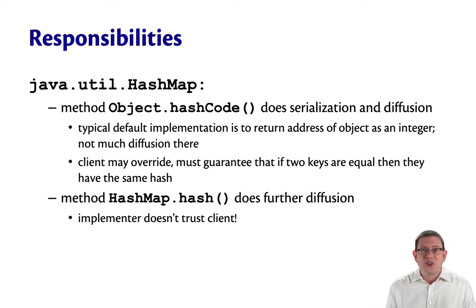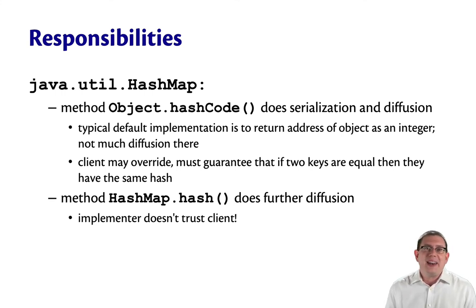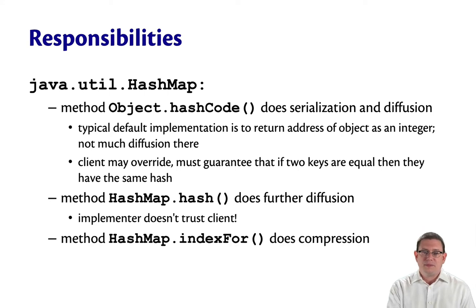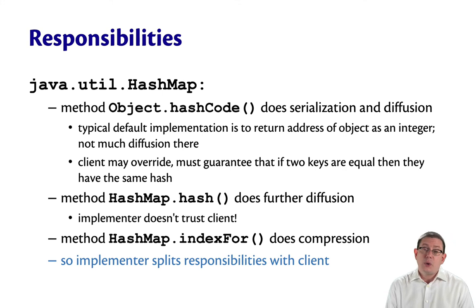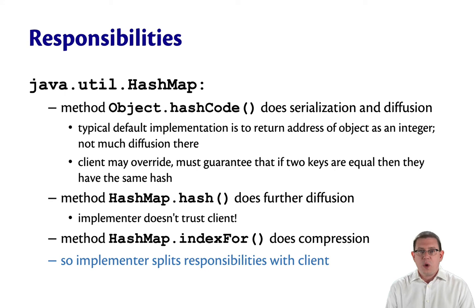The implementer doesn't trust the client here — and that's probably good because we've all written bad hashCode implementations in Java. There's a final method called indexOf that does the compression to figure out what index the bucket should be for a given key. So here the implementer splits the responsibilities for the hash function with the client in a very interesting way.